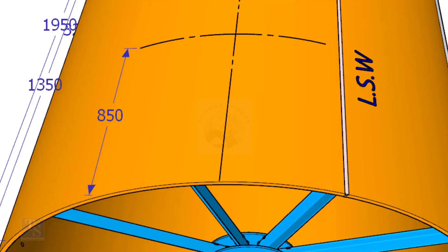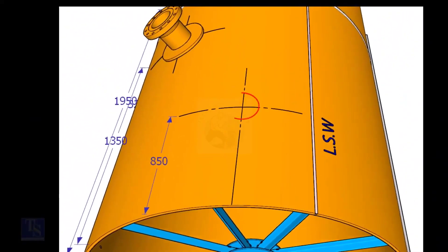Now, mark 850 millimeters exactly on this line from the end of the shell as shown. This is the center of the nozzle N1.